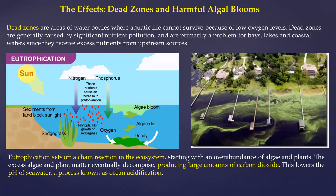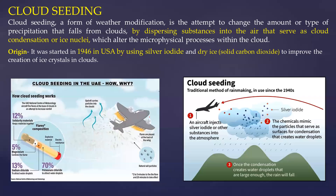Dead zones are increasing day by day and harmful algal blooms are happening. When you change the natural water cycle, algal blooms consume all the oxygen of the water, impacting the entire ecosystem. This produces large amounts of carbon dioxide, and ocean acidification is happening as a result. Now, with the advent of science and technology over the last 70 years, a new intervention is cloud seeding.